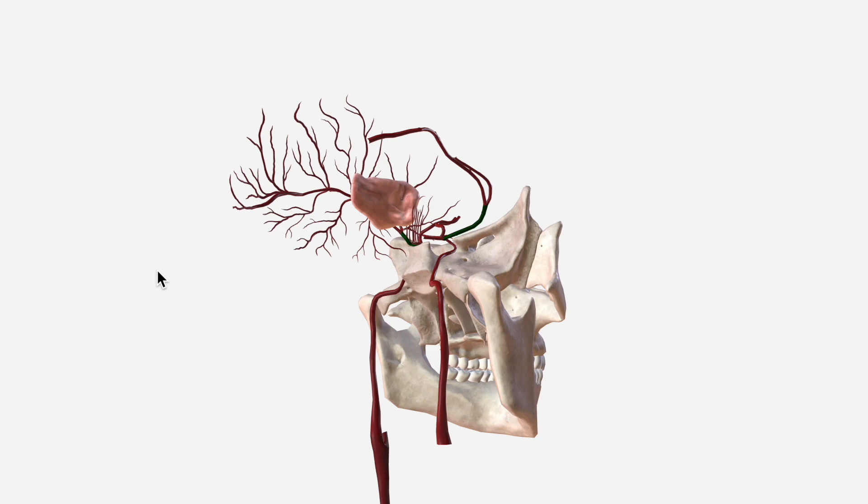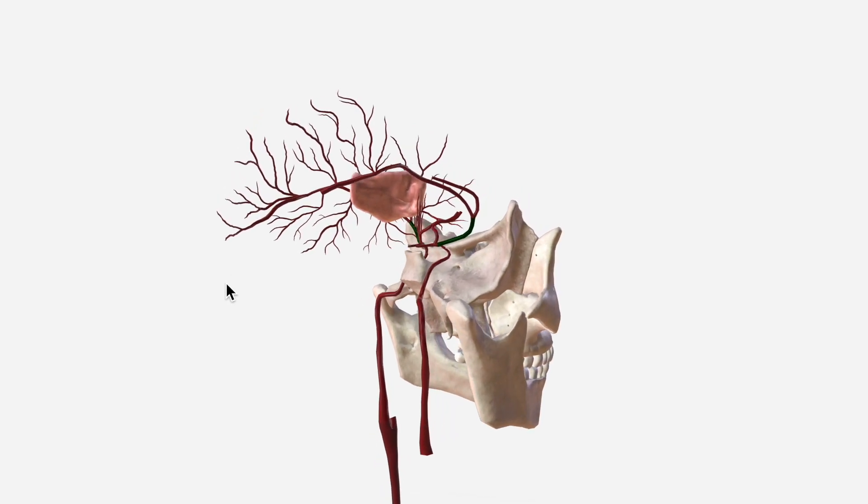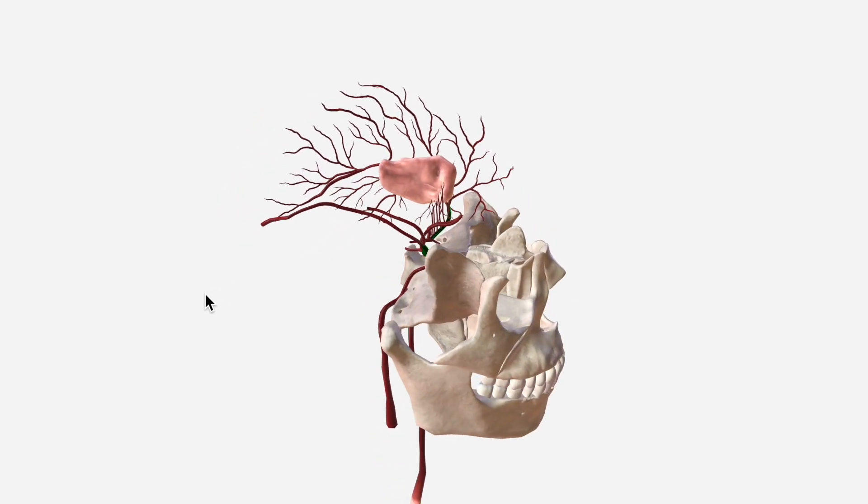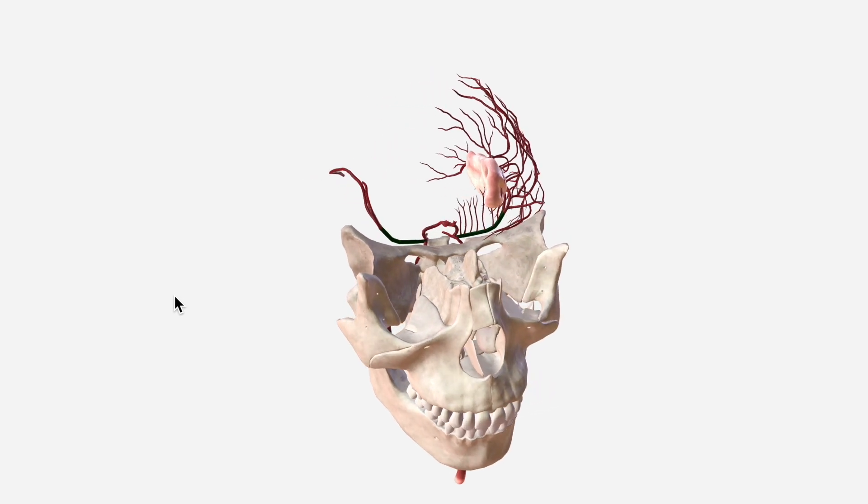Occasionally, in addition, we have an accessory MCA which supplies the orbitofrontal part of the brain. We'll leave it there for now. Thank you so much for watching. Hit subscribe if you like this video and we'll see you next time.